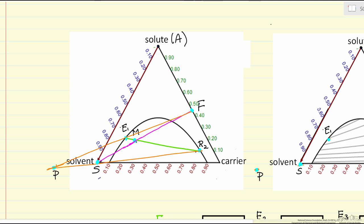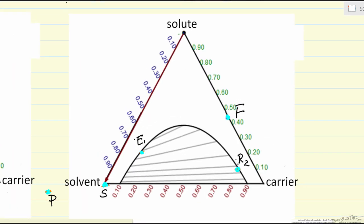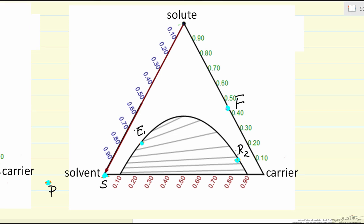So what I want to do now is, once we have this operating point, how to determine the number of stages in this method. Let me take the same diagram, but now I've added in tie lines into the two-phase region. I removed the lines that helped us determine the mixing point and the operating point so it's less complicated.